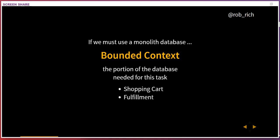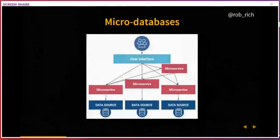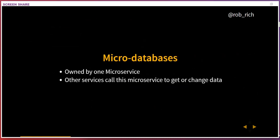Our goal is to get to — and I'm going to coin the term — micro databases that mirror our microservices. A micro database would be owned by the particular service that uses it. This microservice owns this micro database, that microservice owns that micro database. If one microservice needs data from another database, it doesn't go directly — it calls that microservice to get the data. Each micro database is owned by the microservice that creates it, so the microservice can evolve and change that data structure as needed.